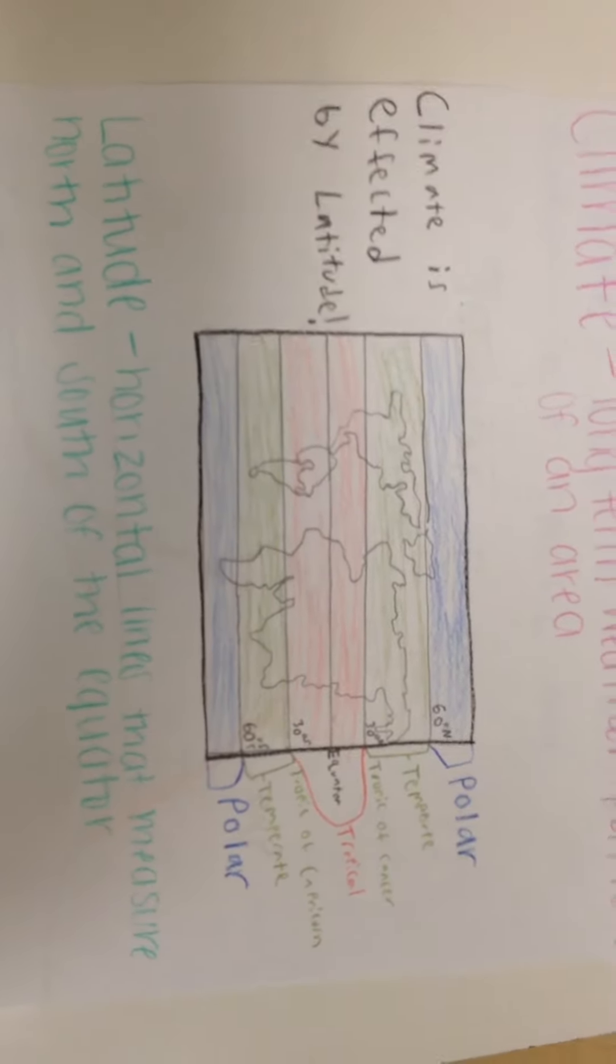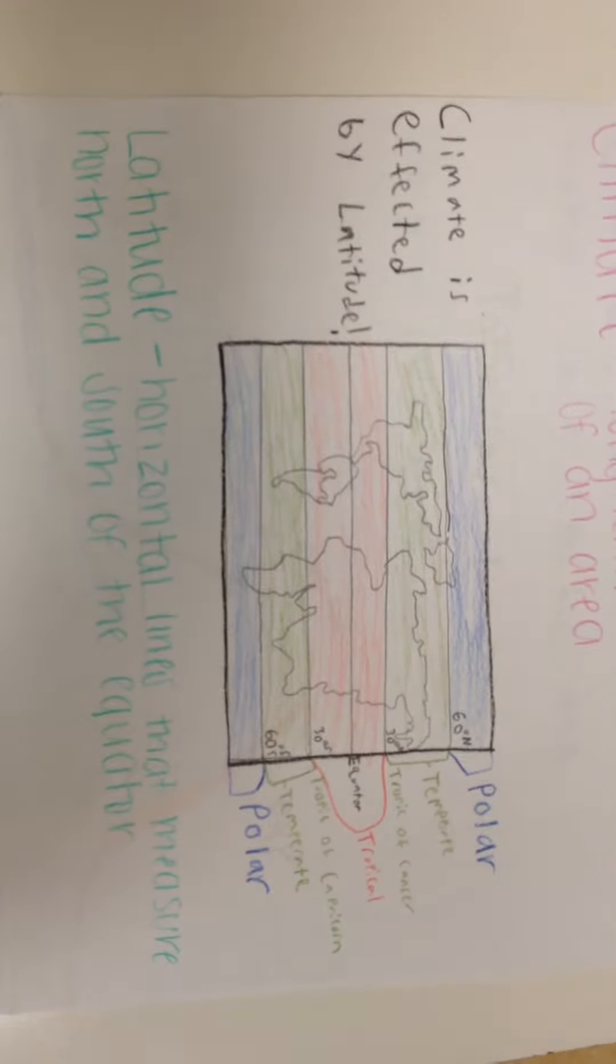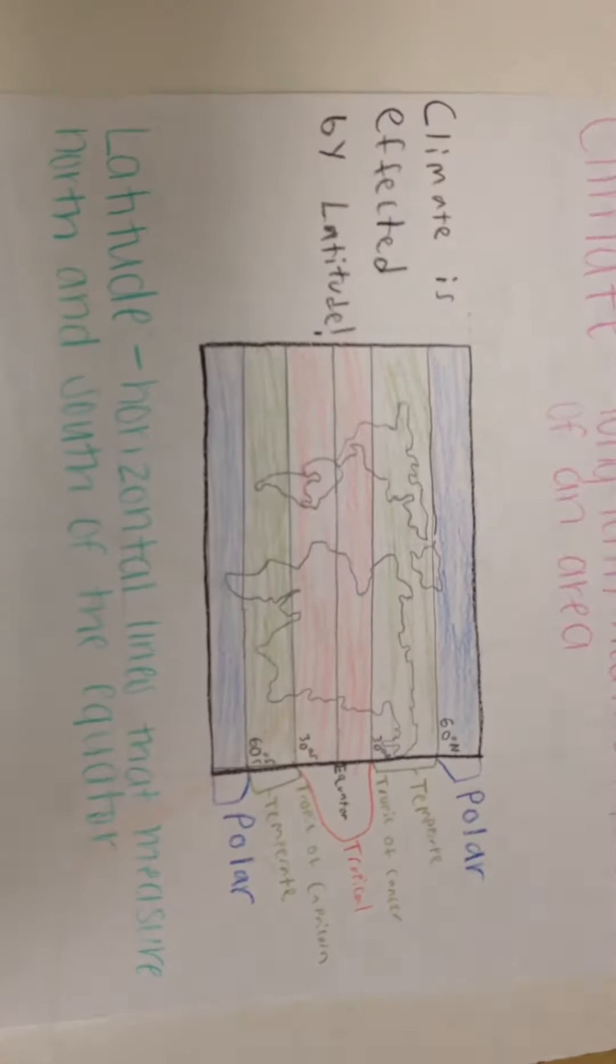From 30 degrees north to 30 degrees south is the tropical area, which is warmer than all the other areas.